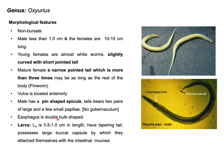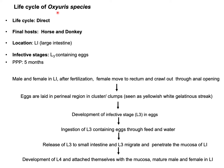The larval stage L4 is around one centimeter in length, having a tapering tail. It possesses a large buccal capsule, and due to this large buccal capsule, they can attach themselves to the intestinal mucosa.